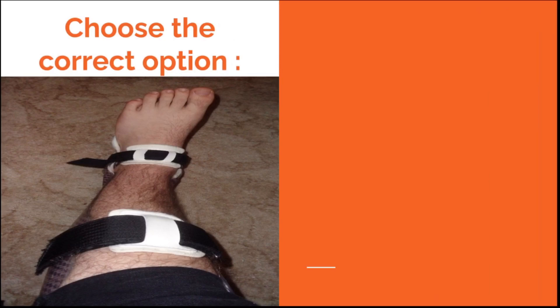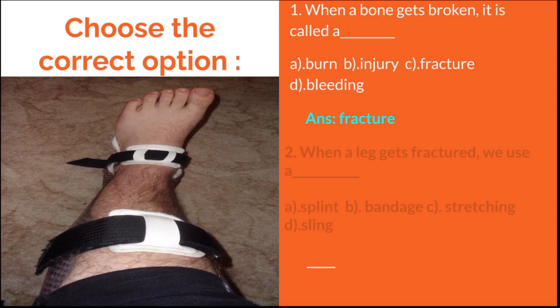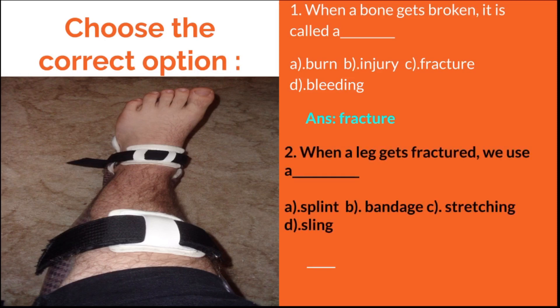Next, let us discuss: Choose the correct option. First question: When a bone gets broken it is called a dash. Options are bone injury, fracture, and bleeding. The answer is fracture. Next question: When a leg gets fractured we use a dash. Options are splint, bandage, stretching, and sling. The answer is splint.